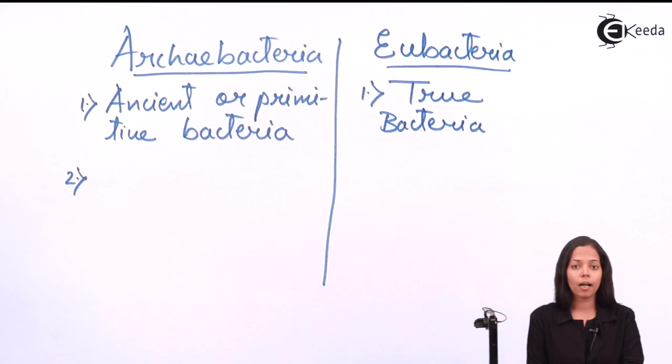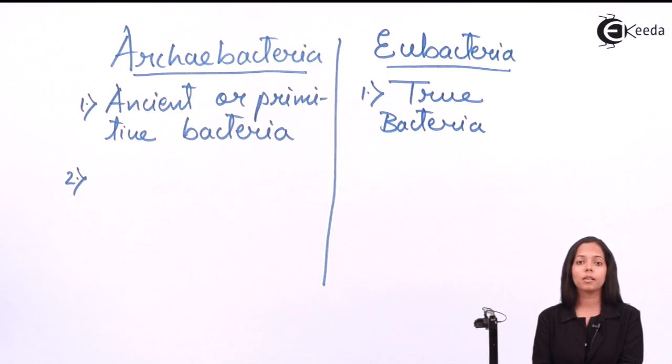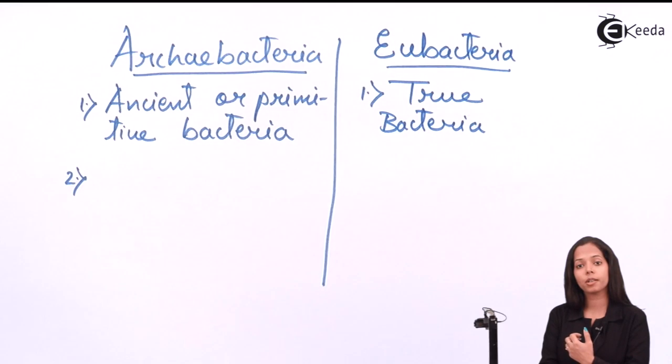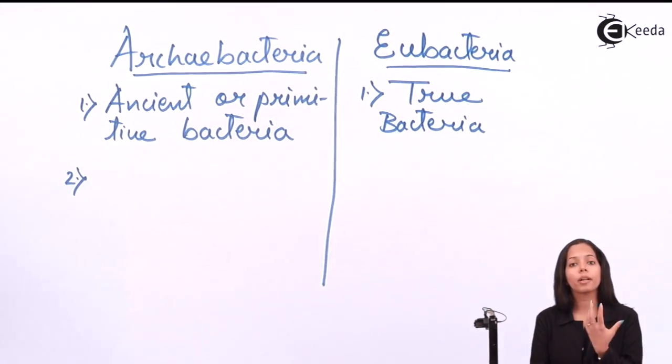Archaebacteria have less efficiency for their cell. Eubacteria have more efficiency for their cell. What is the reason behind this less efficiency and more efficiency? They have less efficiency because of 16S ribosome, and Eubacteria have more efficiency because of 18S ribosome.